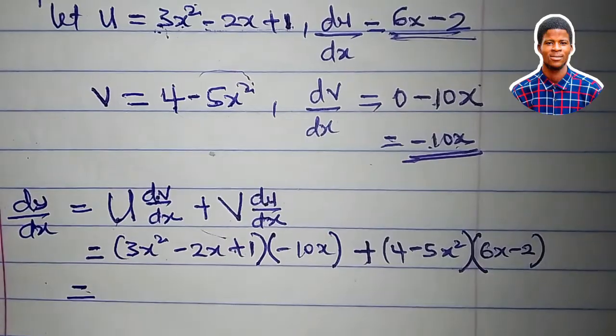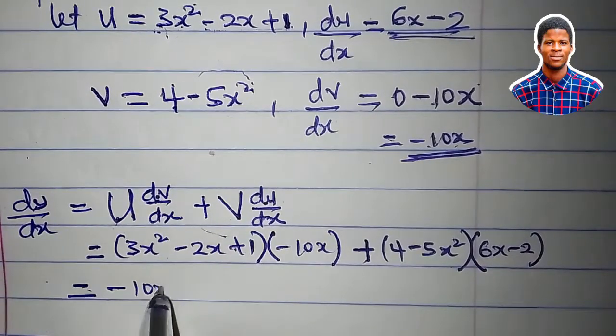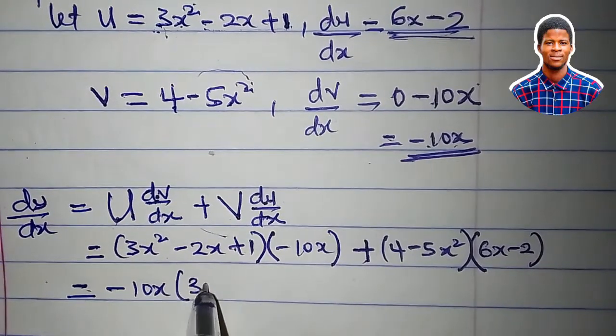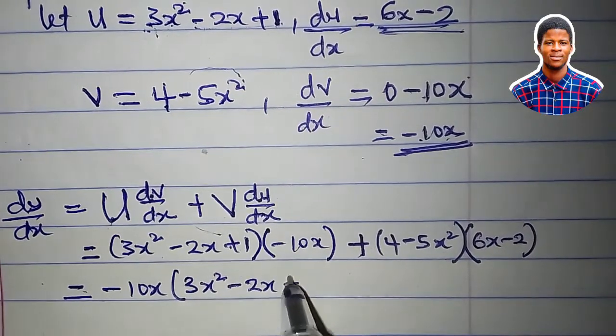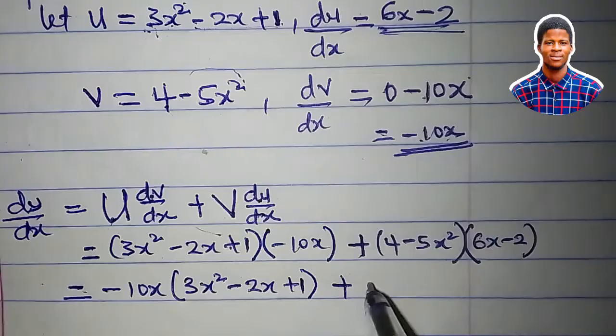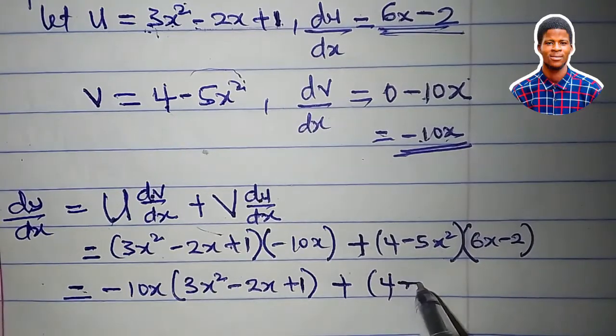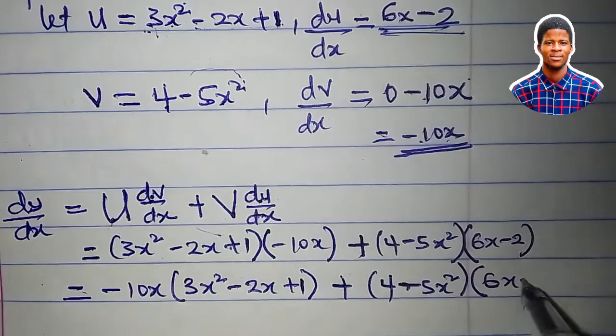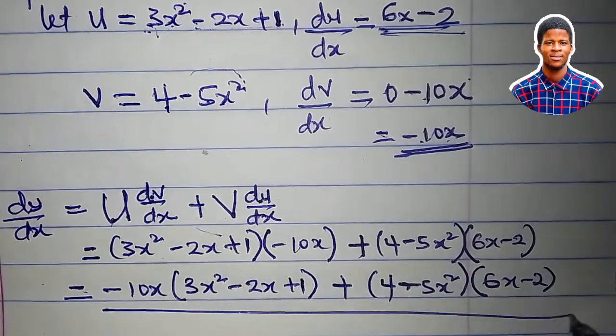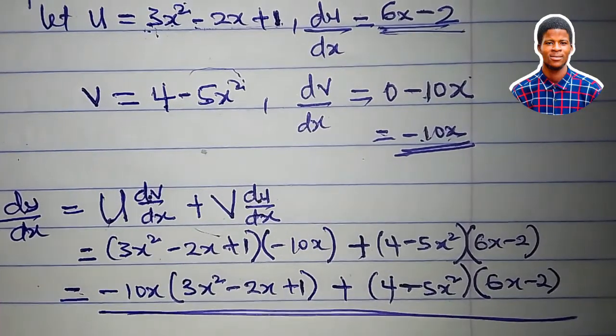And so we can just say minus 10x multiplying 3x² minus 2x plus 1 plus 4 minus 5x² multiplying 6x minus 2. This is dy/dx.